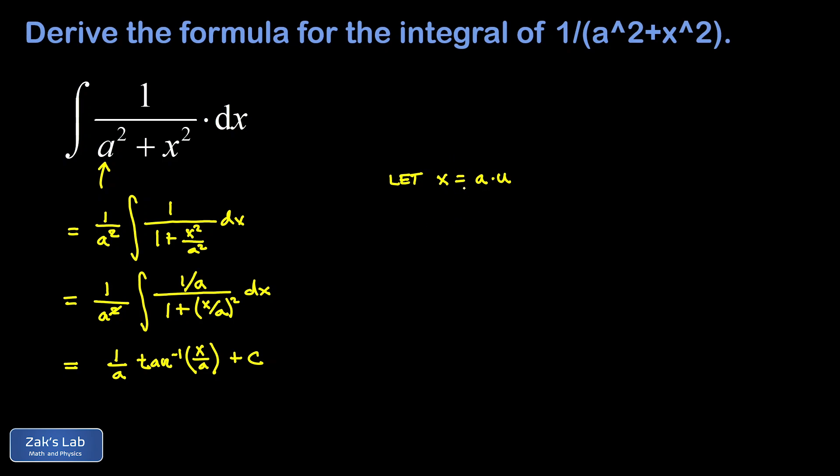When I square the x, I end up with an a squared u squared, and then I can factor that a out and get rid of it. I also have to transform my differential: dx is equal to a du.